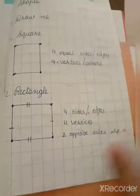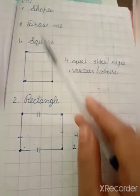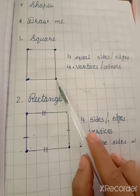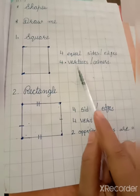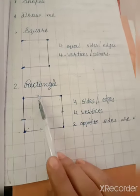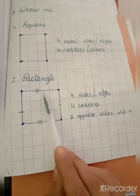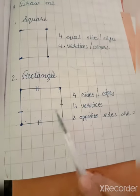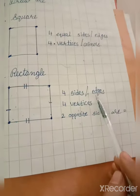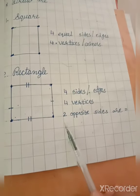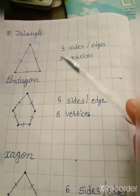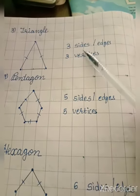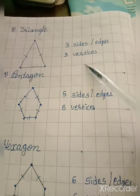Once again I am revising. First, draw a square and write: four equal sides or edges, and four vertices or corners. Then draw a rectangle and write: four sides, four vertices, and two opposite sides are equal. Then draw a triangle and write: three sides or edges, and three vertices.